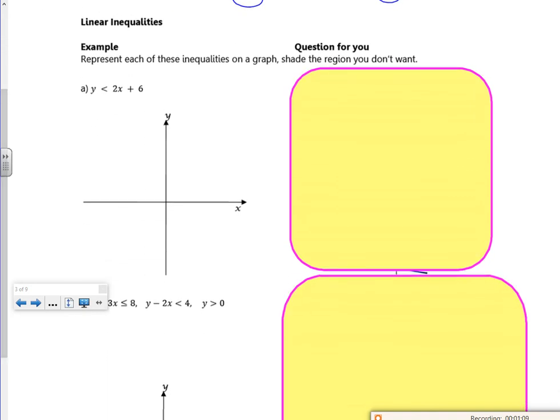So the first bit, the self-study part, asked you to draw straight lines. So what I'm looking at here is the line y equals 2x plus 6. So I know when x is 0, y is 6. So I know 0, 6 is a point. And if I put y is 0, I get 0 is 2x plus 6. So minus 3 is x. So I've got minus 3, 0. So I've got two points.